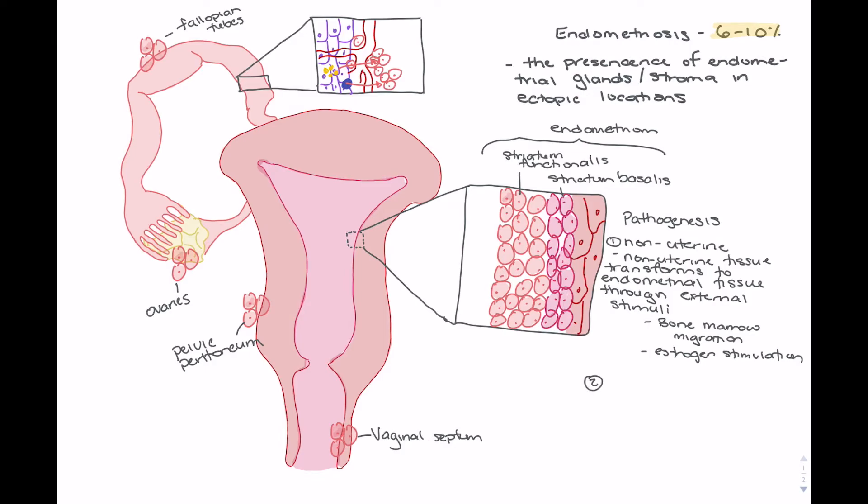Alternatively to non-uterine theories, there are uterine theories that suggest that the spread of the endometrial tissue is coming from uterine origin, or it's coming from the uterus itself. Some of these theories suggest that it could be hematogenic spread, or spread through the blood supply, lymphatic spread, or it could be through retrograde menstruation through patent fallopian tubes.